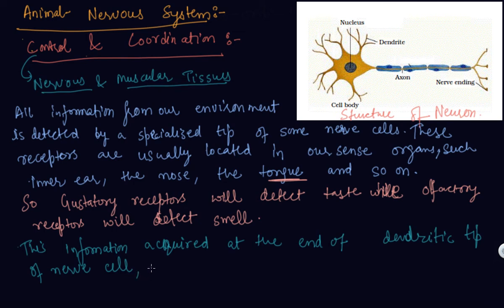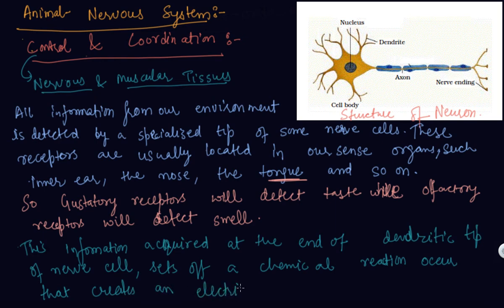Here is the source of a chemical reaction. The dendritic tip of the nerve cell sets off a chemical reaction which creates an electrical impulse.